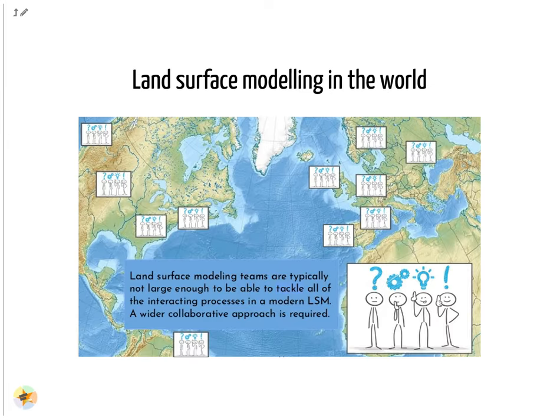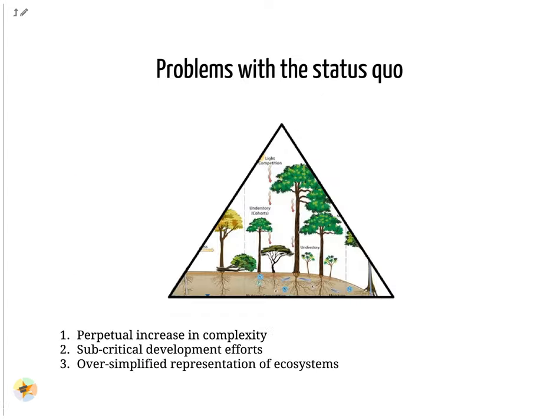One major issue is that there are few land surface model code developers, and land surface modeling teams are typically not large enough to be able to tackle all of the interacting processes in a modern land surface model. A wider collaborative approach is required. So to summarize, we have three major problems to solve: first, the perpetual increase in complexity; second, the sub-critical development efforts; third, the oversimplified representation of ecosystems.